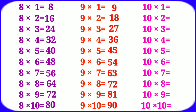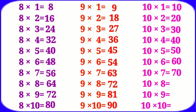Table of 10: 10 ones are 10, 10 twos are 20, 10 threes are 30, 10 fours are 40, 10 fives are 50, 10 sixes are 60, 10 sevens are 70, 10 eights are 80, 10 nines are 90, 10 tens are 100.